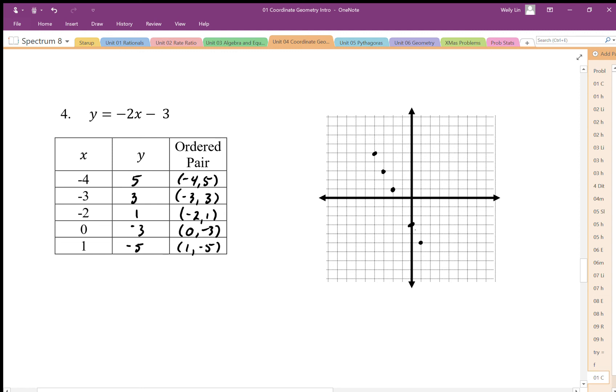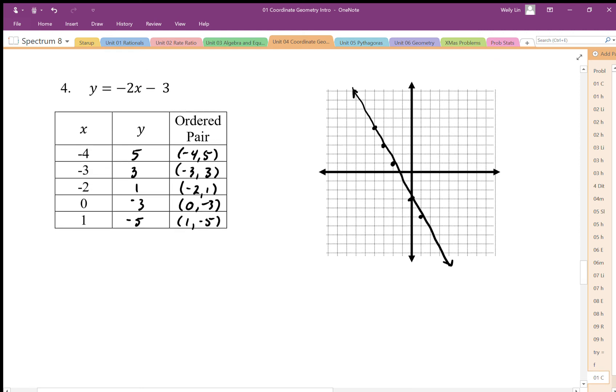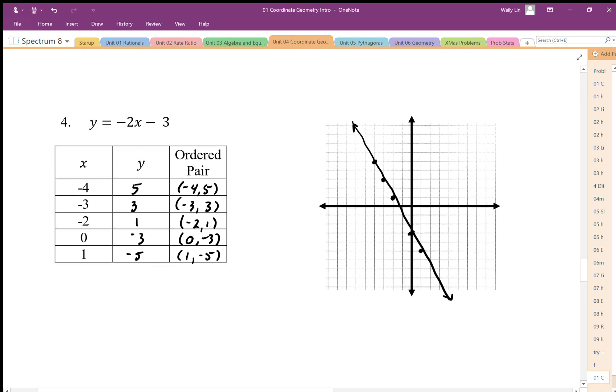And again, that going down by 2s looks like it's giving us a straight line pattern. So double check your work there and make sure that you're getting the same patterns that I've gotten here.